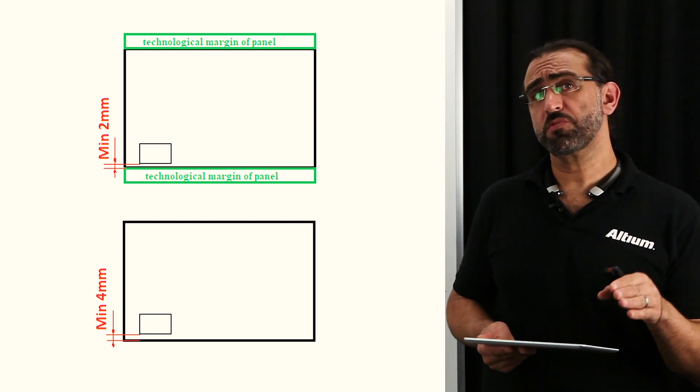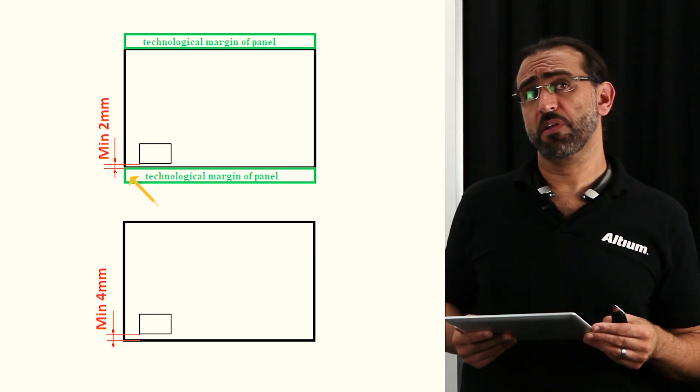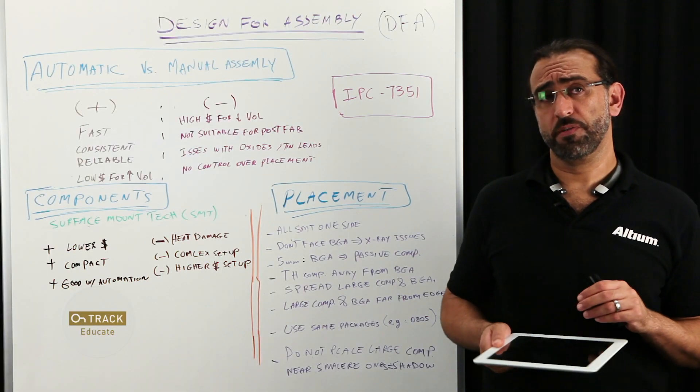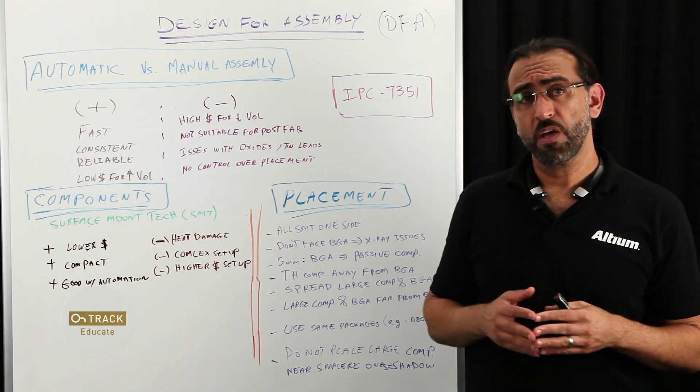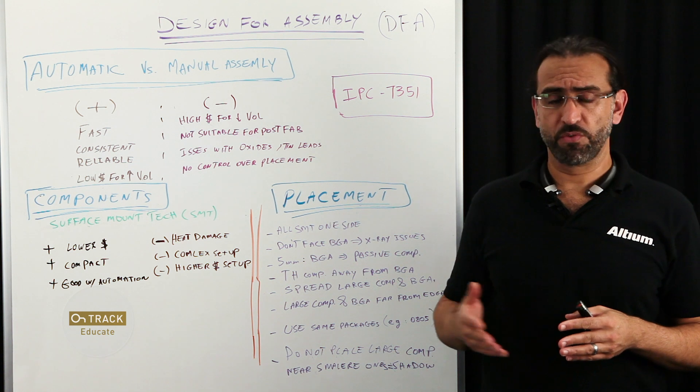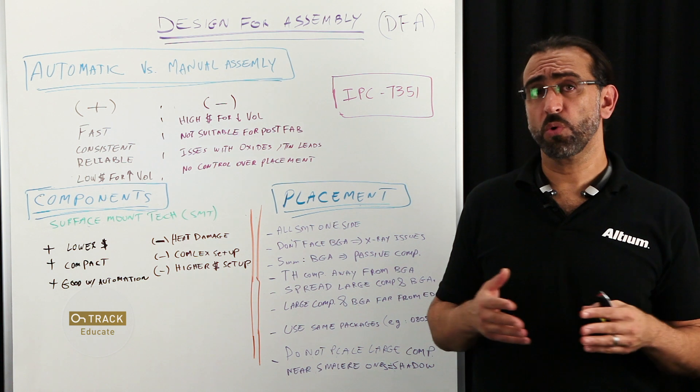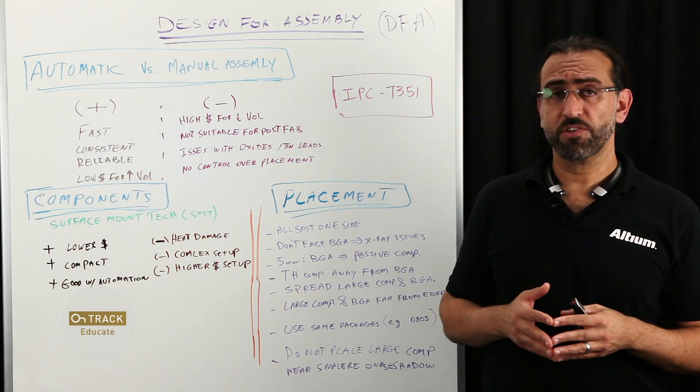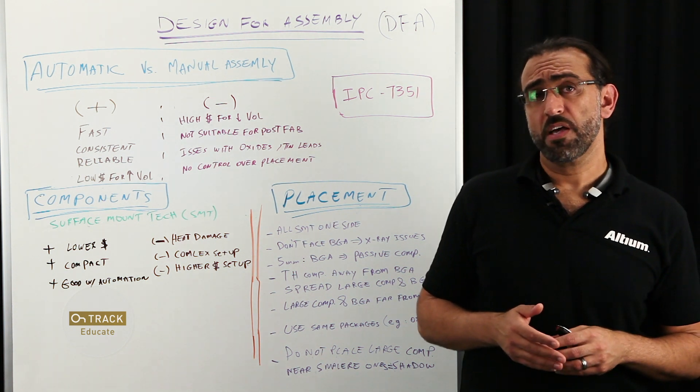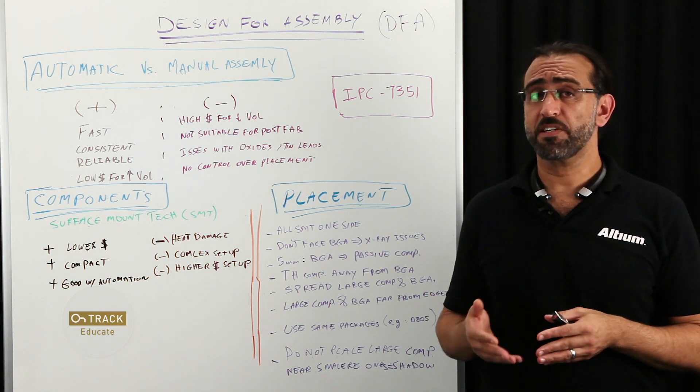Components should always be placed no closer than two millimeter from the board edge if you are using strip line technology, and at least four millimeter if you're not using the strip line technology. And when possible, always try to use the same package size throughout your design. For example, for caps and resistors, if you elect an 0805 package, then try to use it throughout the whole board. Keeping the same size will definitely optimize your installation performance.